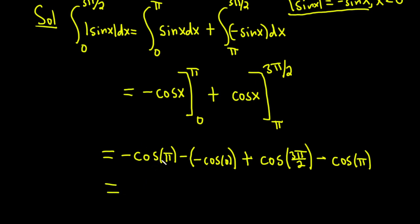This is equal to, the cosine of pi is negative 1. So we already have a negative here. So it's going to be 1. Okay? Cosine of 0 is 1. We have negative and negative so it's going to be plus 1. Plus, cosine of 3 pi over 2 is 0. Cosine of pi is negative 1 so it's minus negative 1. So you end up with 1 plus 1 plus 1 which is equal to 3.